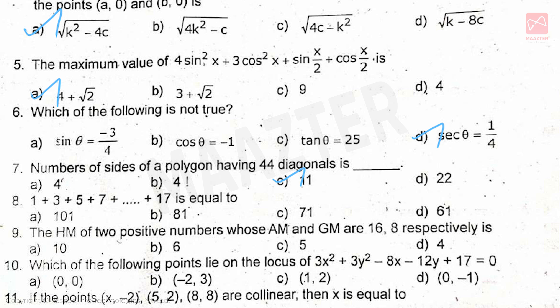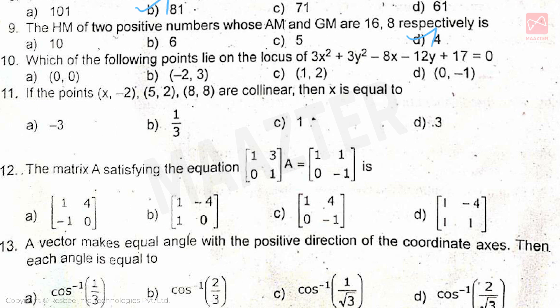Number of sides of a polygon having 44 diagonals is, answer is option C. Next, 1 + 3 + 5 + 7 + ... + 17 is equal to, answer is option B. Next, the HM of 2 positive numbers whose AM and GM are 16 and 8 respectively is, answer is option D.